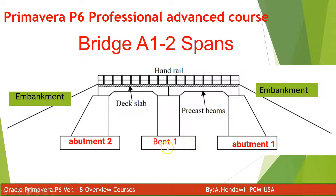This lecture is going to be about doing relationships — meaning the sequence of work. Normally you do constructability review and sit with the project manager and superintendents to go through the sequence of work. For this easy case, you do excavation for abutment, then the column, the same for bent excavation, the footing, new column, abutment two, and then the precast beam, slab, handrail, and embankment.